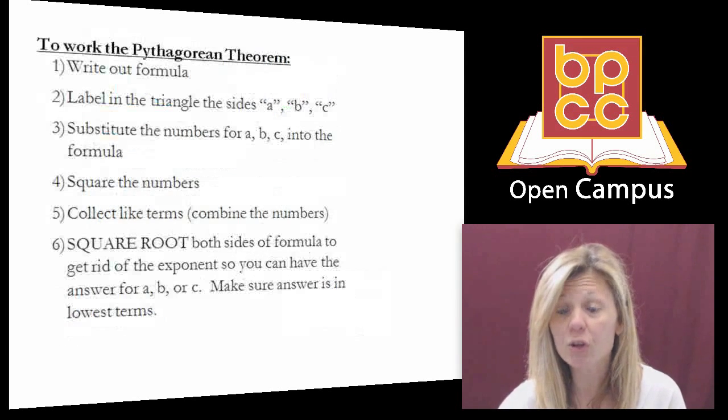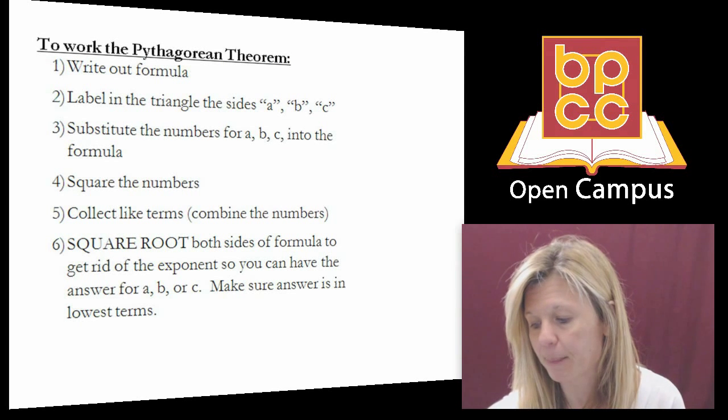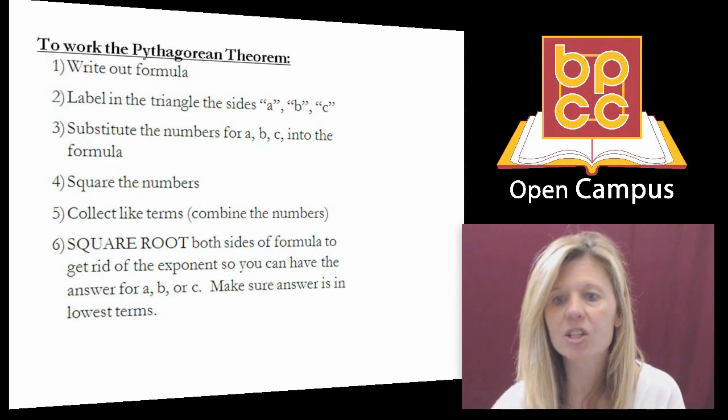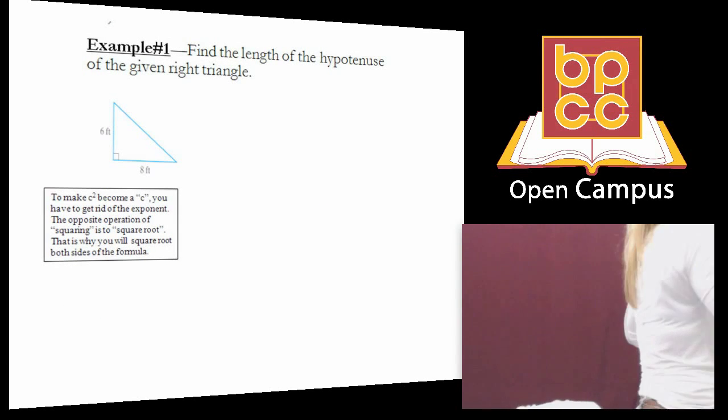Now what we're going to do today is learn how to work the Pythagorean theorem with some examples. So we're going to start off with example one. It says, find the length of the given right triangle if the legs are 6 feet and 8 feet. So let's go to the board and work this out.